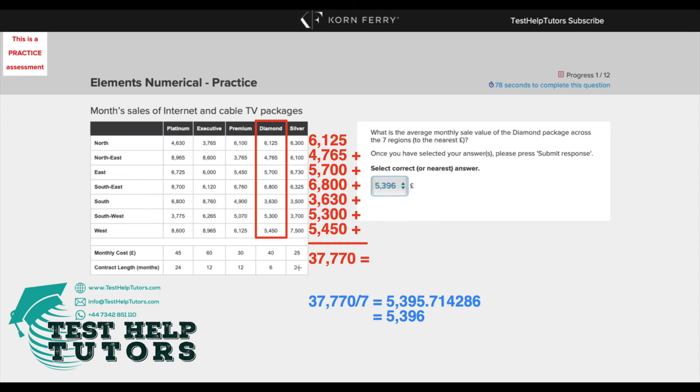So to work out the average what we'd have to do is 37,770 divided by seven and that gives us 5,395.714286 which is 5,396 pounds to the nearest pound.